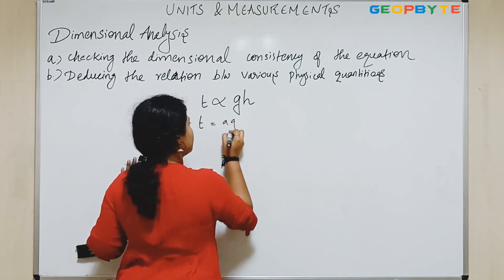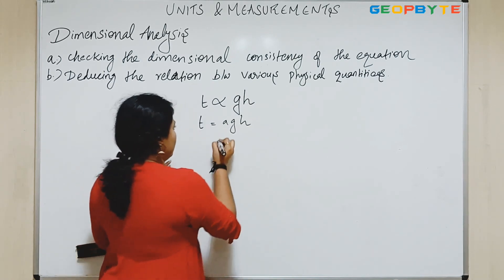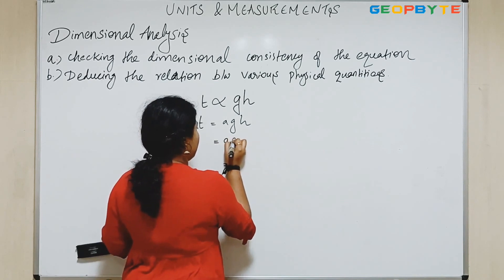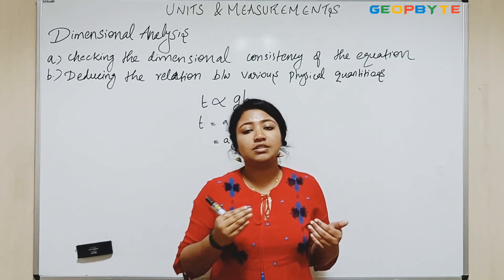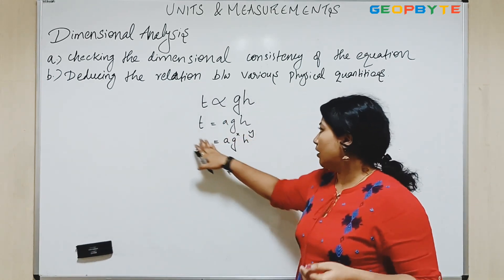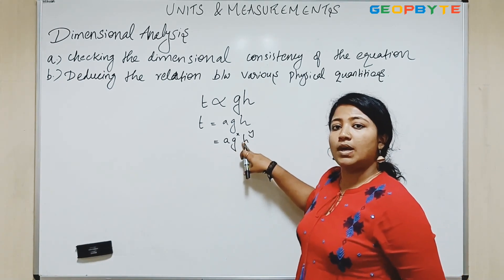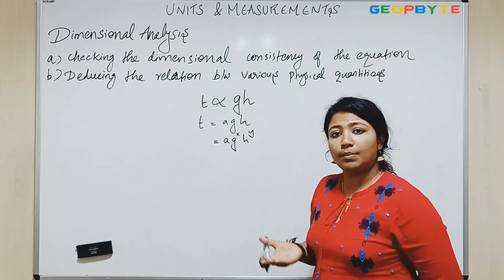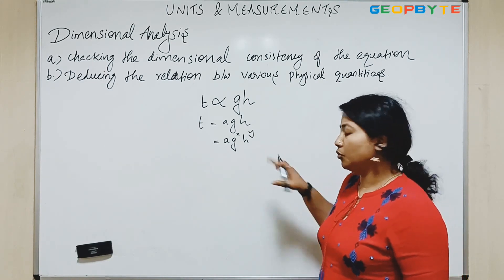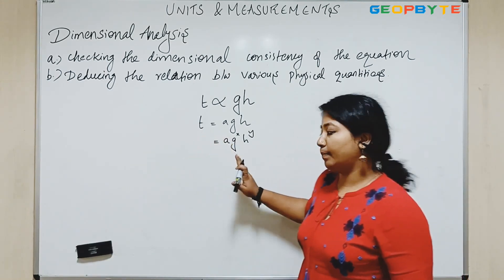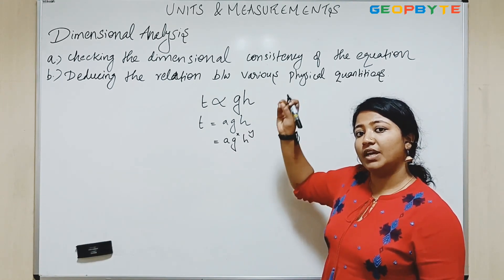So I want to know how time depends upon acceleration due to gravity and the height of the object from where it is dropped. We know that T has dimensional equation T to the power 1. This is equal to A times G — acceleration due to gravity, that is L T to the power minus 2 — to the power X, and H — which is L — to the power Y. So this can be written as A times L to the power X, T to the power minus 2X, and L to the power Y.